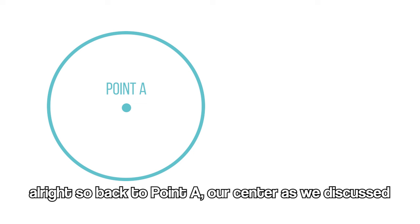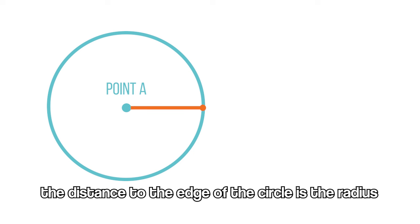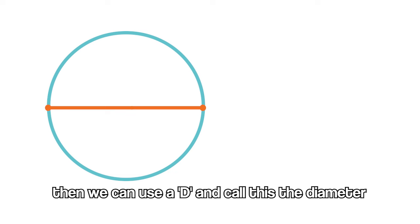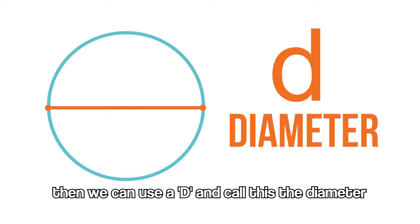Alright so back to point A. As we discussed, the distance to the edge of the circle is the radius. And if we extend that line across the full length of the circle, then we can use a D and call this the diameter.